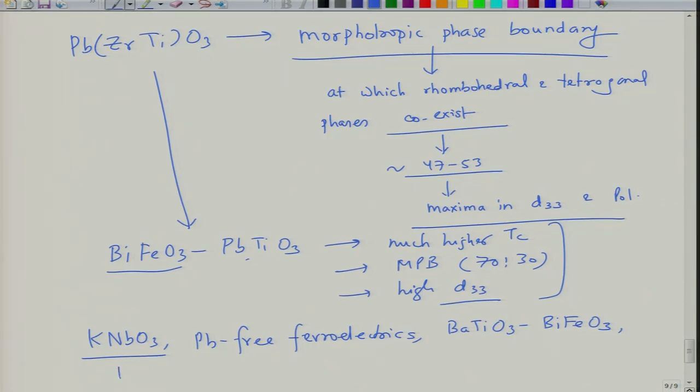Another option is PVDF (CH₂CF₂)_n, a polymeric ferroelectric. PVDF does not have very high piezoelectric coefficient or polarization, but it is still a useful material because being polymeric you can make many flexible devices from it. We will stop here and come back to more aspects of ferroelectric, piezoelectric, and pyroelectric materials before looking at their applications.